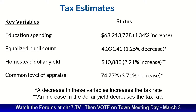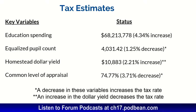The education spending was increased — you can see that number, 4.34. So when it increases, it puts pressure on our budget. And then the equalized pupil count was decreased by 0.2, so when it decreases, that also puts pressure on our budget. You can see already the first two variables are putting pressure on our budget. And then the dollar yield was 2.21, which is another area that showed pressure on our budget.